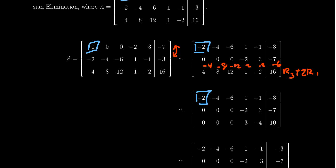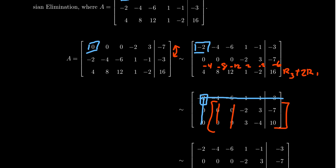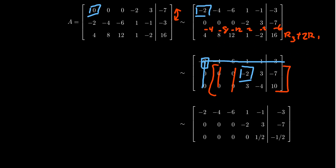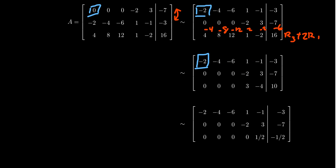So we move our pivot to the next position. When looking for the next pivot, we do this recursively — we ignore the column and row of the previous pivot and look at just the submatrix. Looking for the leftmost non-zero column in that submatrix, it's actually going to be the fourth column. So our new pivot position is in the two, four position. Remember, we ignore pivot rows and columns when we look for the new pivot.